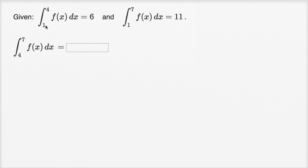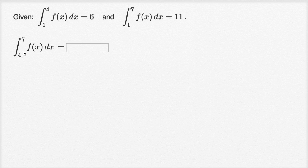We're given that the definite integral from one to four of f of x dx is equal to six, and the definite integral from one to seven of f of x dx is equal to 11, and we want to figure out the definite integral from four to seven of f of x dx.